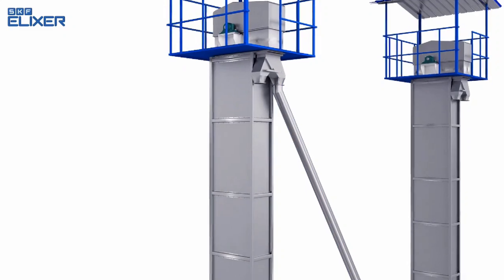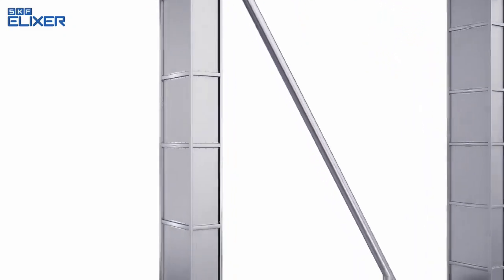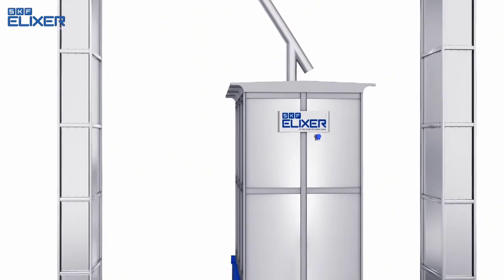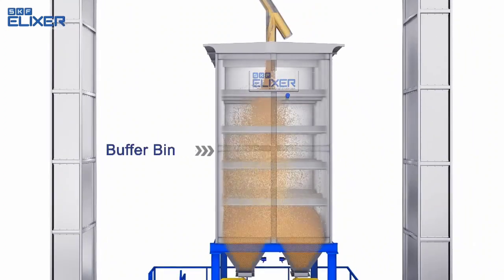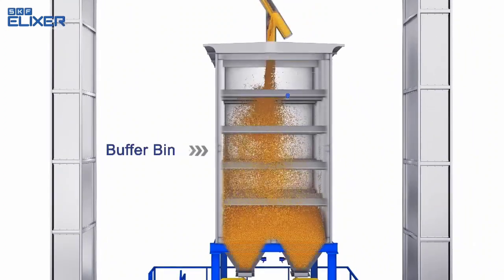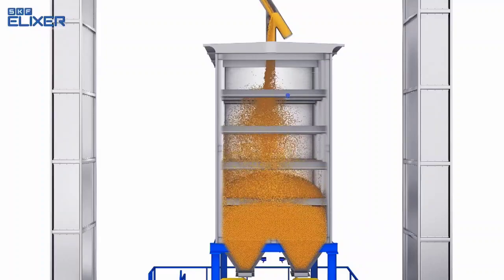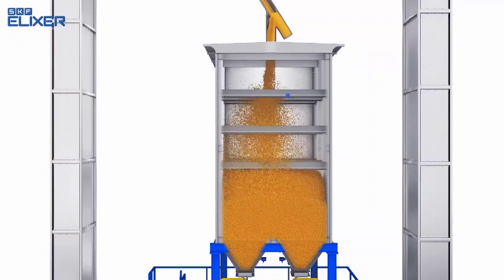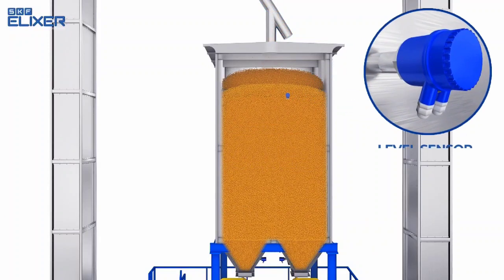The APPS elevator conveys the paddy to the top and stores it in the APPS buffer bin. Once the paddy reaches the high level, special sensors detect the filling. Each bottom hopper has these sensors at low levels.